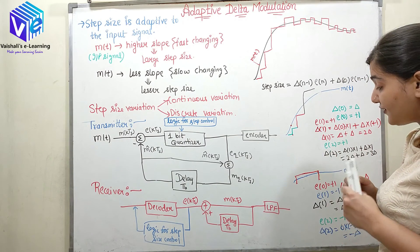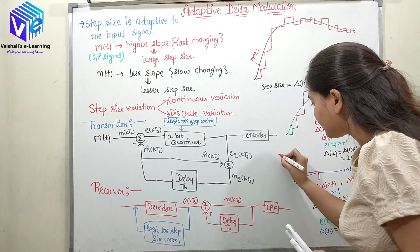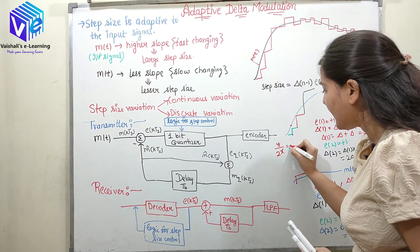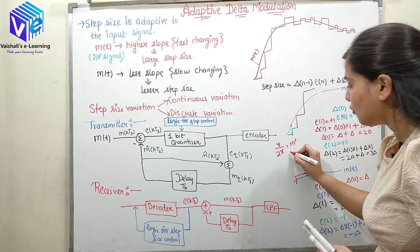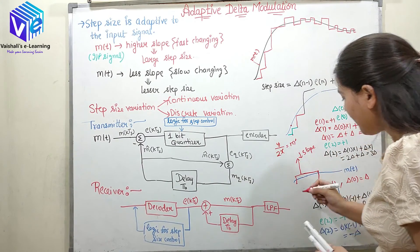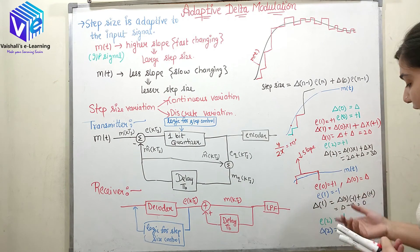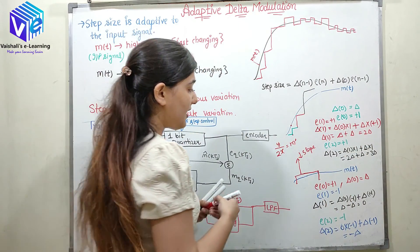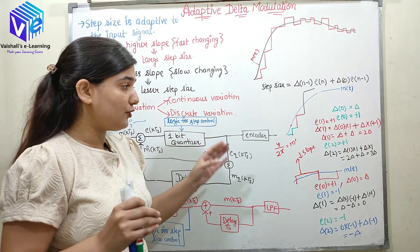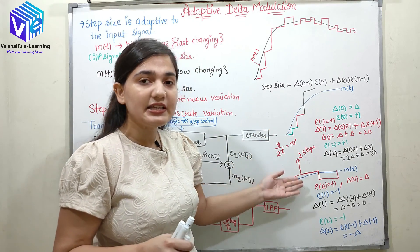Now if you see, I have decreased the slope. I have increased the x-axis and decreased the y-axis — here x-axis is twice and y-axis is the same. So y upon 2x — I can say the slope has decreased. When my message signal has lesser slope, the slope of the step size would decrease. If I again find out δ, again it will be having lesser slope. Here I have decreased the step size.